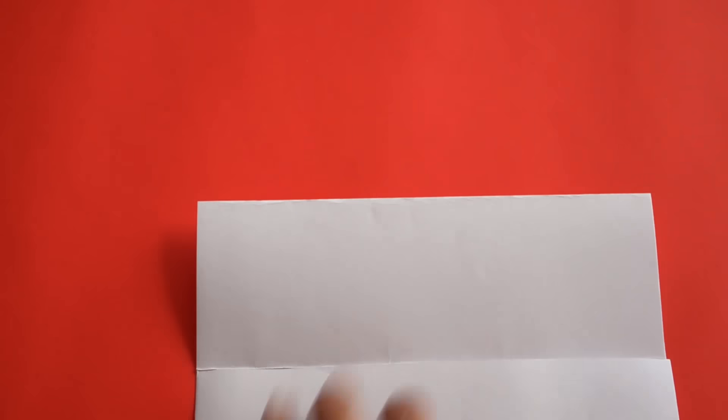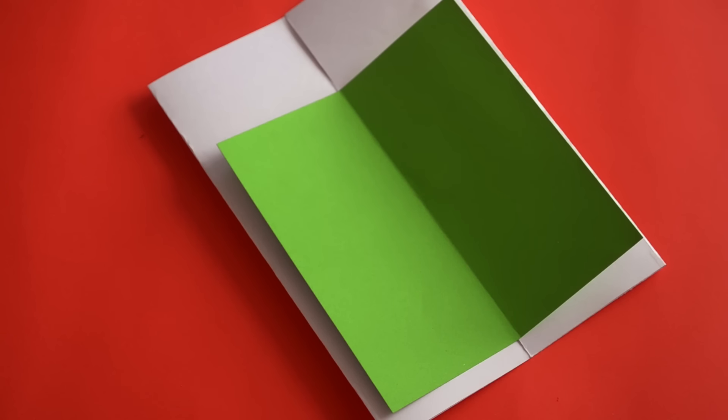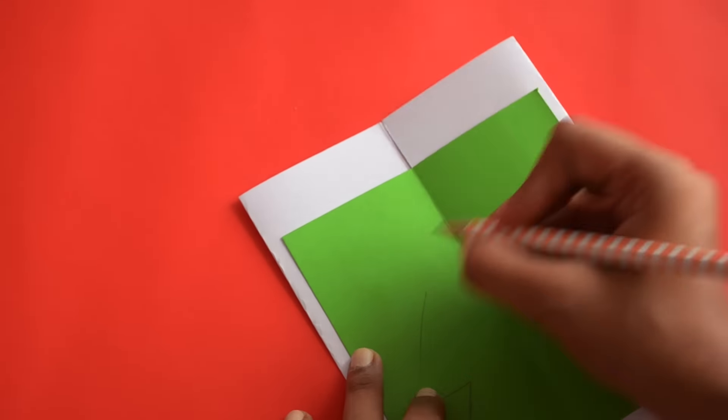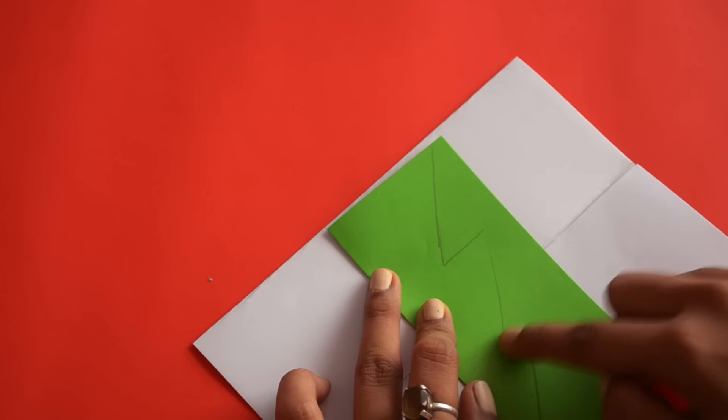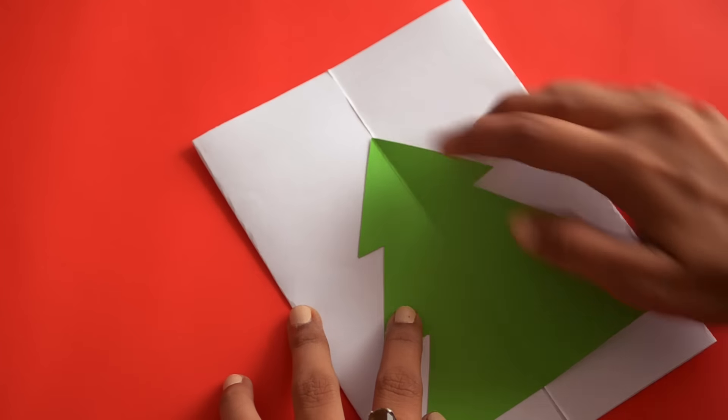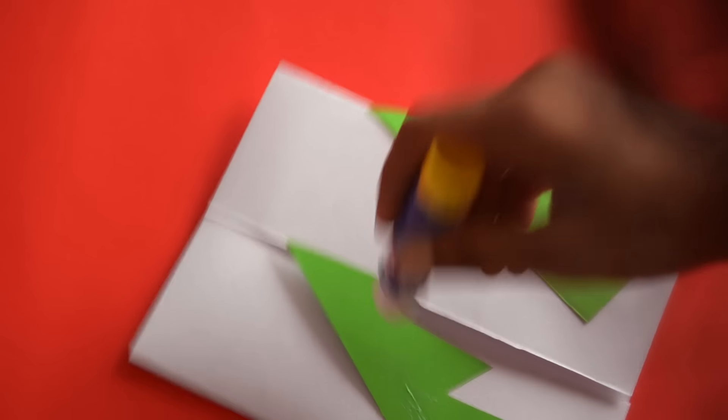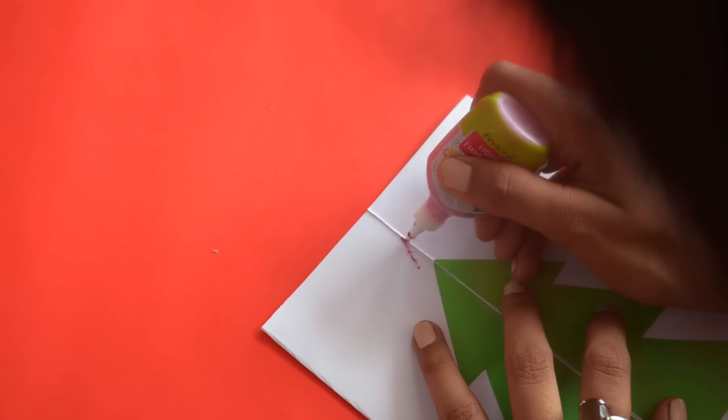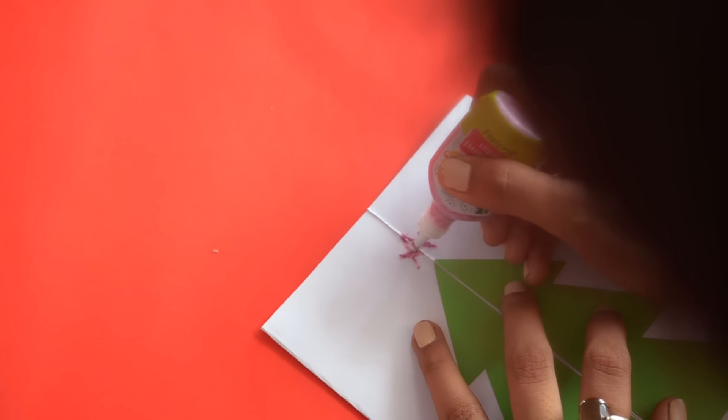For the third card, I folded a white card paper from both sides equally. And then I took a green card paper, drew a symmetrical Christmas tree and cut it out. Then I decorated the tree with some glitter, acrylic paint and ribbons and this is how it looked like.